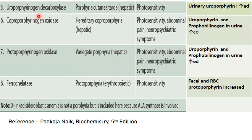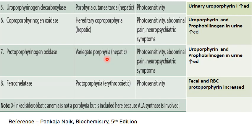Deficiency of uroporphyrinogen decarboxylase leads to porphyria cutanea tarda, the most common type of porphyria, a hepatic category. Accumulation of porphyrins leads to photosensitivity, and urinary uroporphyrin level is increased. Deficiency of coproporphyrinogen oxidase leads to hereditary coproporphyria, a hepatic type. Accumulation of ALA, PBG, and uroporphyrin causes abdominal pain, photosensitivity, and neuropsychiatric symptoms. Deficiency of protoporphyrinogen oxidase leads to variegate porphyria, also hepatic, with photosensitivity, abdominal pain, and neuropsychiatric symptoms.